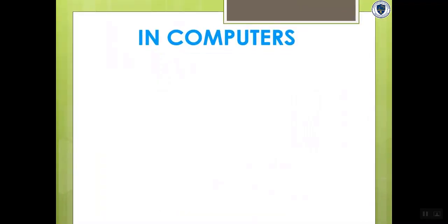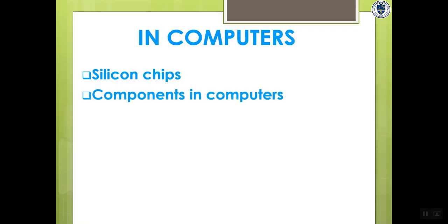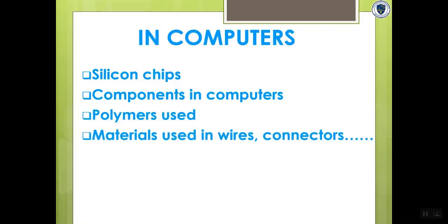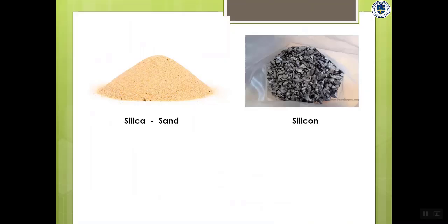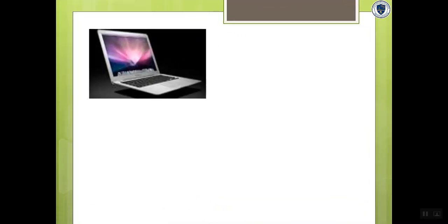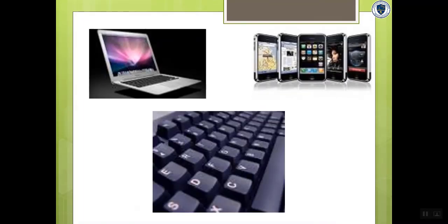Computers is nowadays ruling the world. For making the basic components of computer circuits, we need elemental silicon which can be obtained from sand. Also for making a computer device, many materials like polymers, copper wires, soldering materials are used. If you look into this picture, sand which is abundant in our earth crust called silica, that is silicon dioxide, is converted to elemental silicon which is used for making silicon chips. For making many devices for the computer field like laptops and its components, mobile phone and its components, we are using the basic manufacturing principles from chemistry.